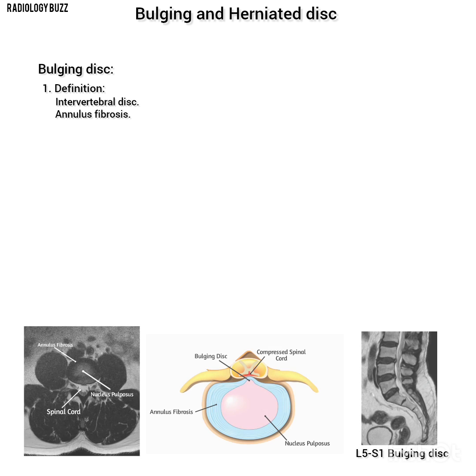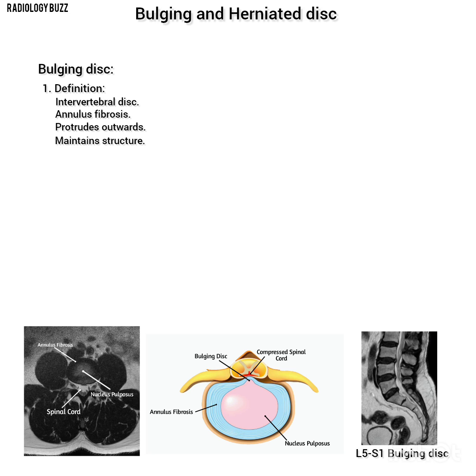Bulging disc — Definition. A bulging disc occurs when the outer layer of the intervertebral disc, called the annulus fibrosis, protrudes outward beyond its normal boundary. Despite this protrusion, the disc maintains its structure and the inner gel-like core, known as the nucleus pulposus, stays contained within the annulus fibrosis.